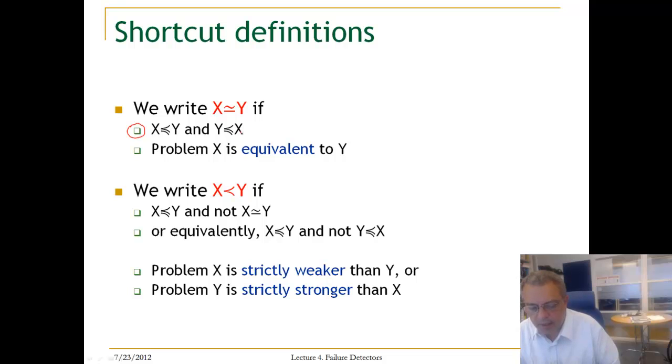If X is reducible to Y and Y is reducible to X, we say that X and Y are equivalent. The other one is more important, which is, if Y can implement X, it means that X is reducible to Y, but this does not hold, then we use this notation and we say that X is strictly weaker than Y, and Y is strictly stronger than X.